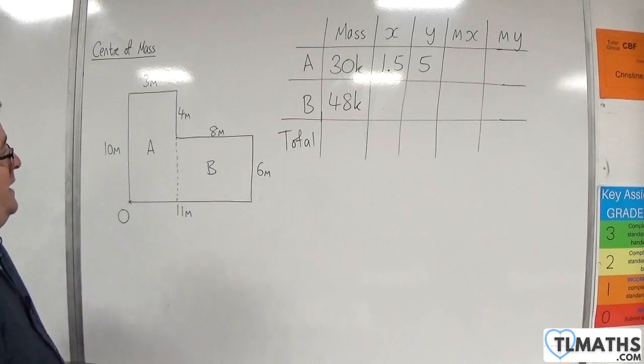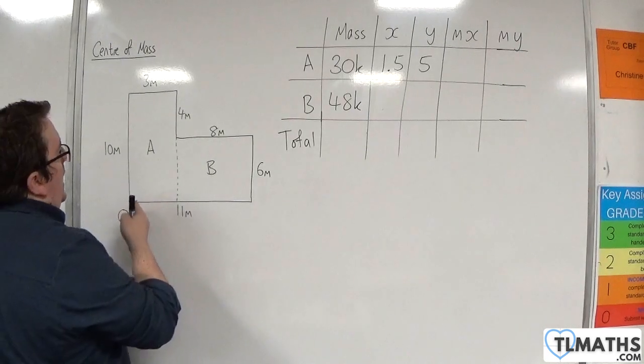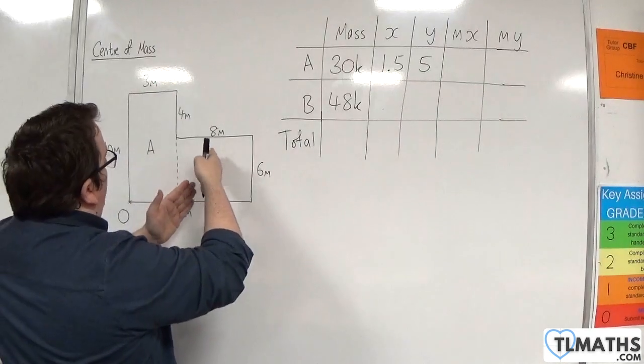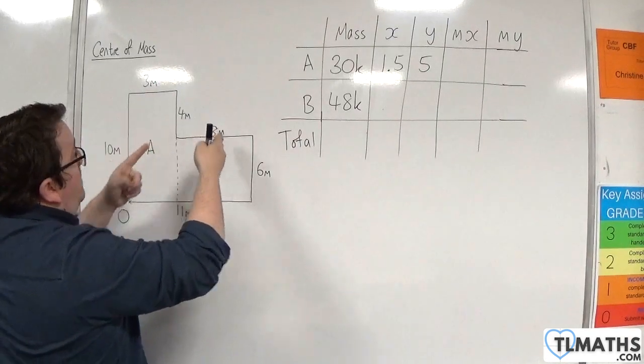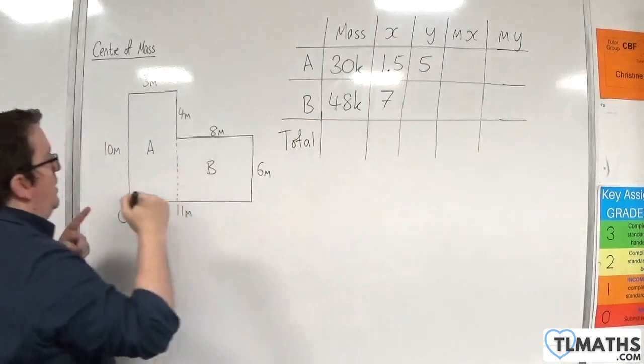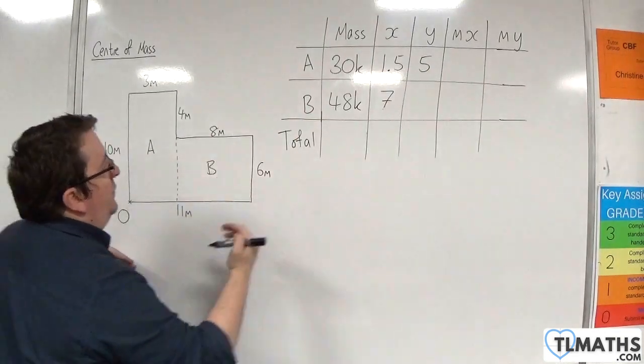Now as for B, that's 3 meters long, so it's going to be in the middle here. So 4 meters, so 7 meters along in the X direction, and 3 meters up in the Y direction.